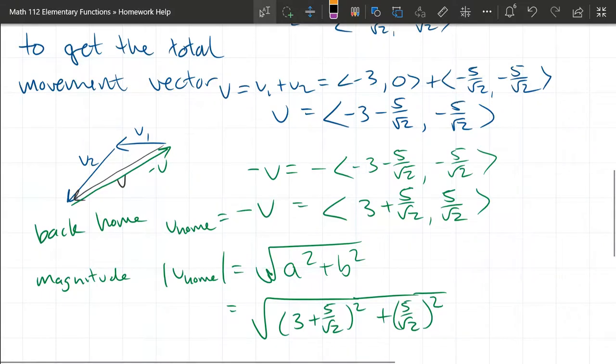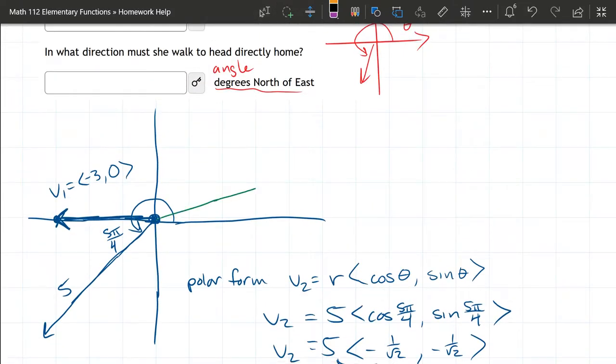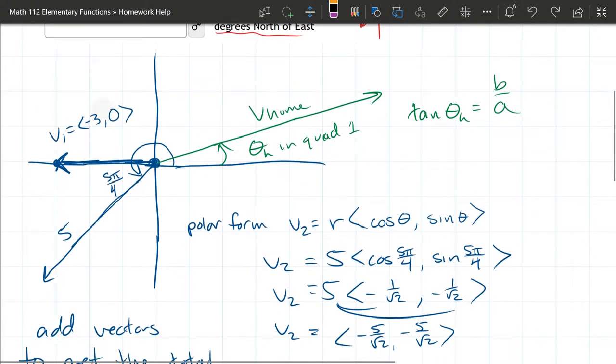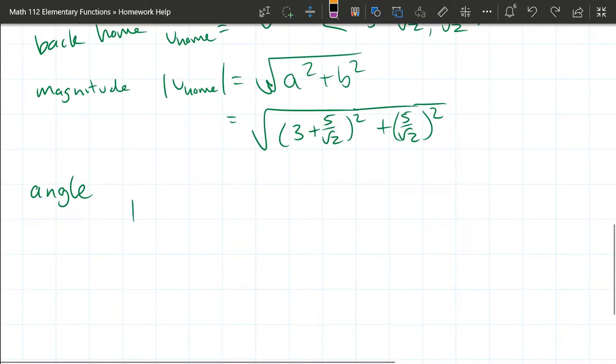Now we're going to look at the angle of this particular vector. This V_home is going to look something like this, and this angle is going to be in quadrant one. I'll call it θ_h for theta home, and this is in quadrant one, so everything's going to be positive. What that means is tangent of θ_home is going to be our y over x, so it'll be b over a. If this vector was in quadrant two or three, I would have to add π to it, but I don't have to do that in this case.